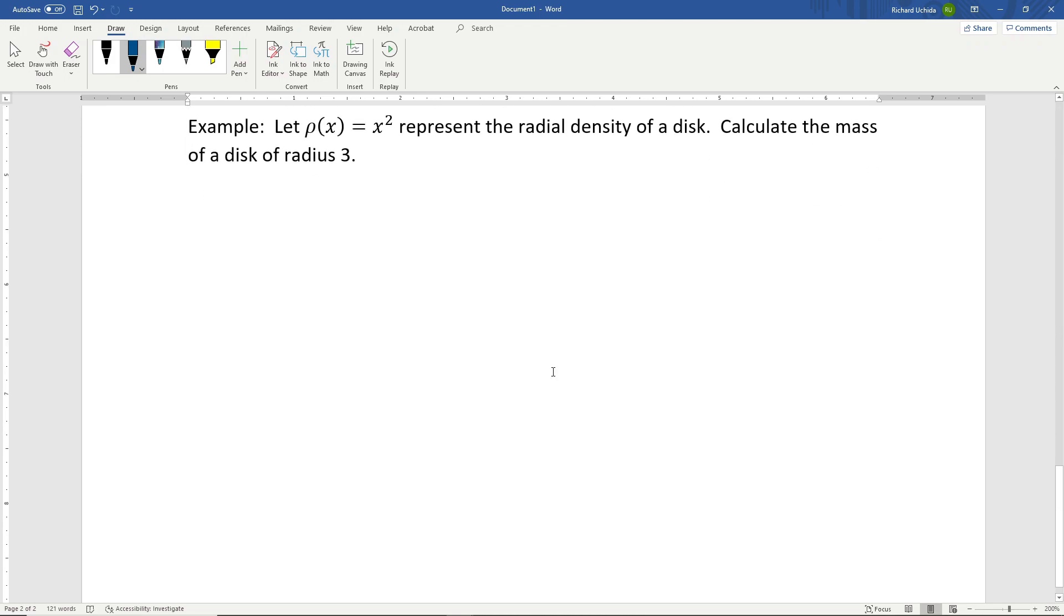Looking at an example, let ρ(x) = x² represent the radial density of the disk. This gives the density from the center of the disk outwards based on this density function. Calculate the mass of a disk of radius 3.